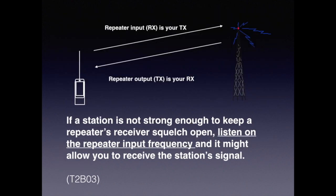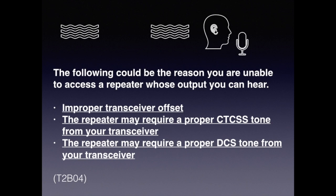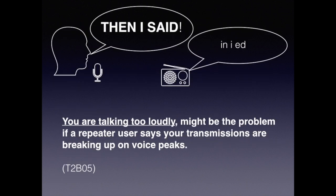If a station is not strong enough to keep the repeater's receive squelch open, listen on the repeater's input frequency and it might allow you to receive the station's signal. There are several reasons why you might not be able to access your repeater: you may have an improper transceiver offset, the repeater may require the proper CTCSS tone, or the proper DCS tone from your transceiver. A common issue when using a repeater is over-modulation, caused by speaking into the microphone too closely or too loudly. The exam question is: you're talking too loudly might be the problem if a repeater user says your transmissions are breaking up on voice peaks.